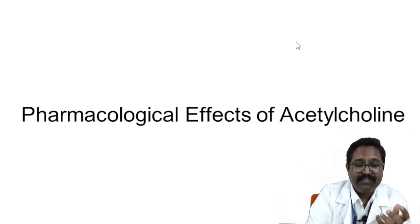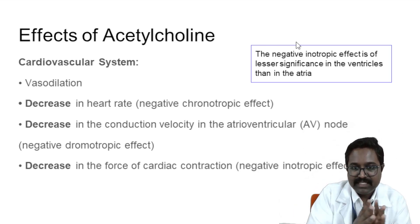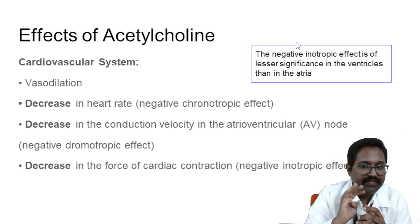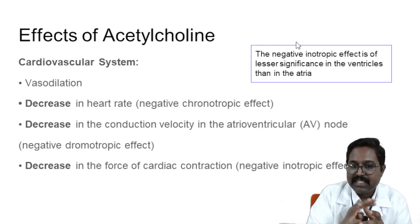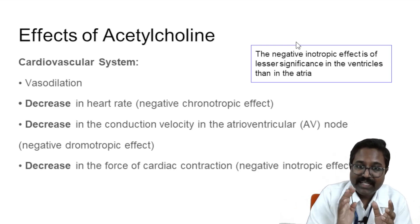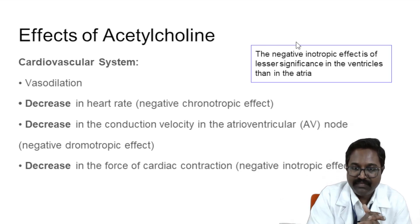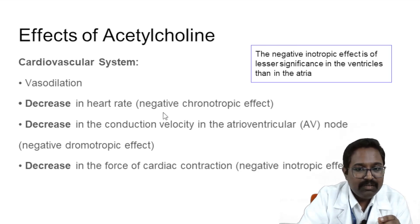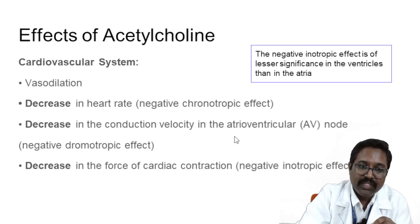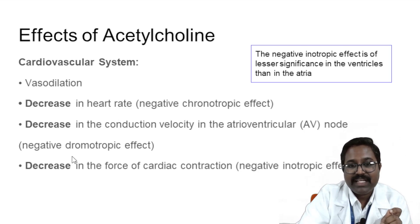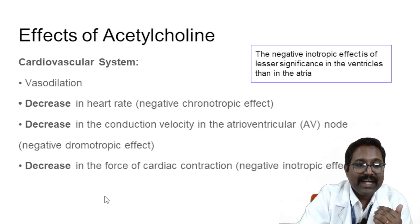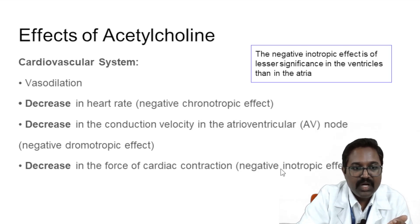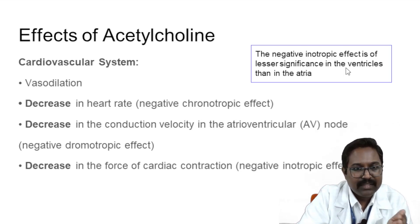The pharmacological effects of acetylcholine on the cardiovascular system include four actions. On blood vessels it causes vasodilation. In the heart itself, it decreases all activity: it decreases heart rate — negative chronotropic action; decreases conduction velocity at the AV node — negative dromotropic action; and decreases the force of cardiac contraction — negative inotropic action. All these negative inotropic effects are of lesser significance in the ventricles than in the atria.